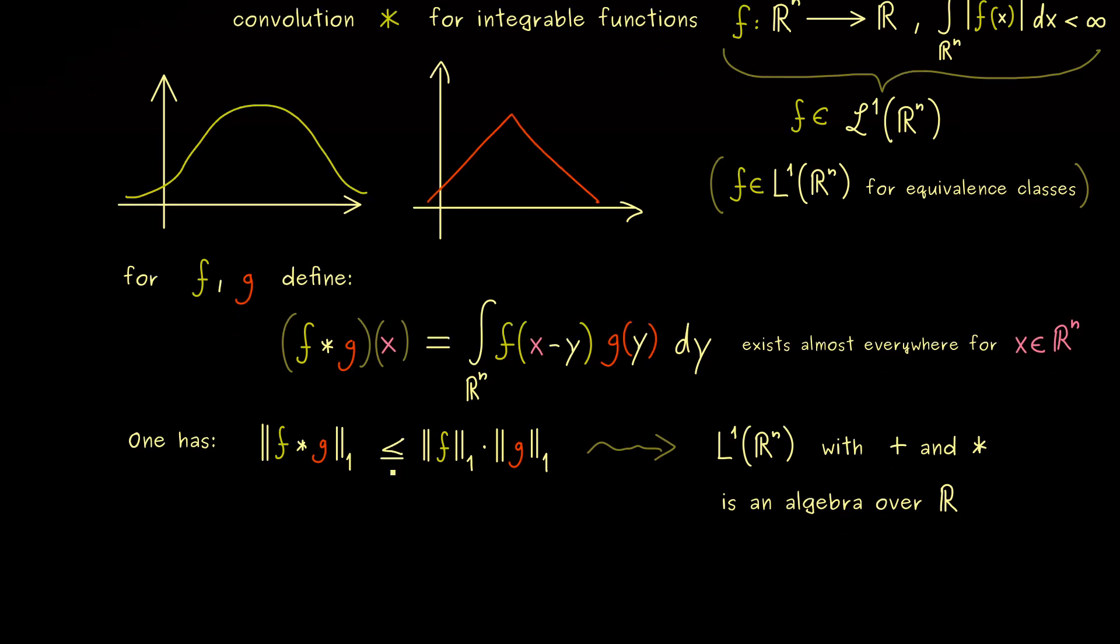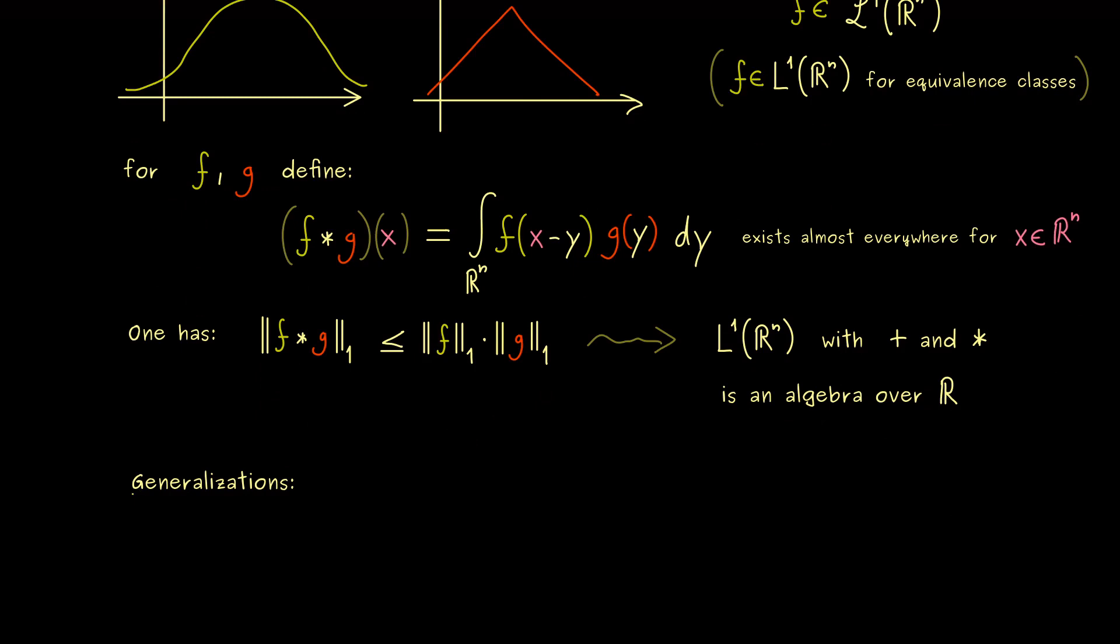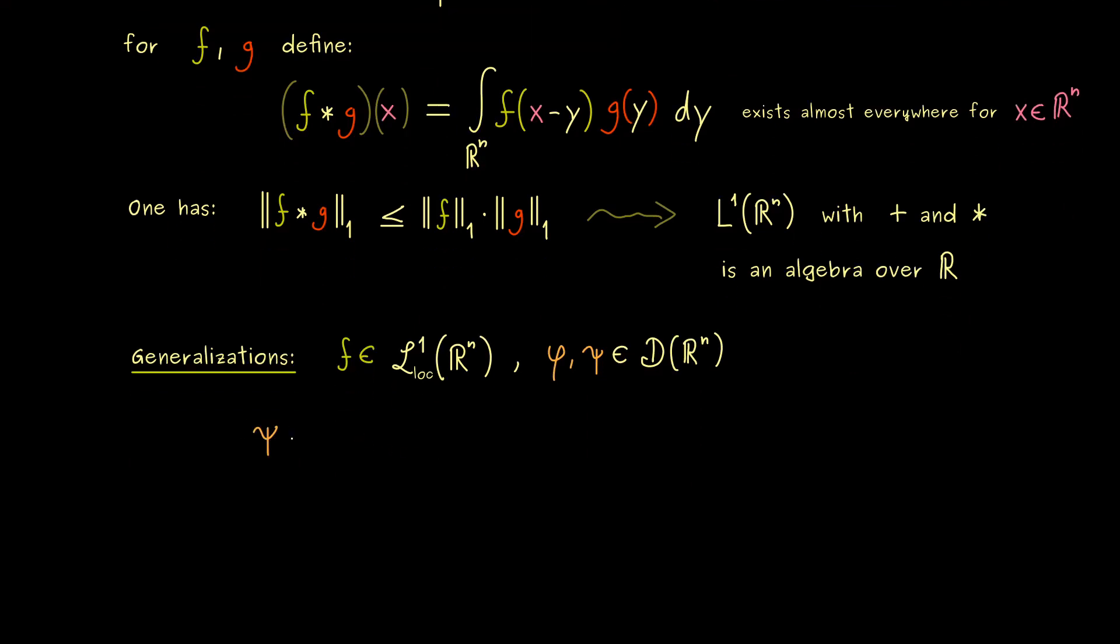So let's fix f as a locally integrable function, and usually we write it like that, L¹ with loc in the index. And in addition, we also take two test functions φ and ψ. And of course they are also integrable, so we don't have any problems with the convolution there. Okay, then let's write it down. I want to have a convolution with the test function ψ and the function f. So we have ψ star f. And then I want to put this into the integral with the test function φ. So I denote the brackets here to denote an inner product, which is just the integral. And inside the integral we just have the multiplication of both functions.